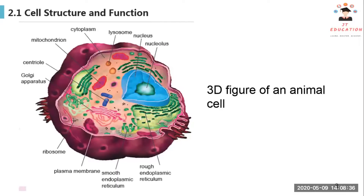This is a 3D figure of an animal cell. You can see that in animal cells there are several cell components which have been labeled here. The most visible one will be the nucleus, and inside the nucleus we have the nucleolus, which is the core of the nucleus.